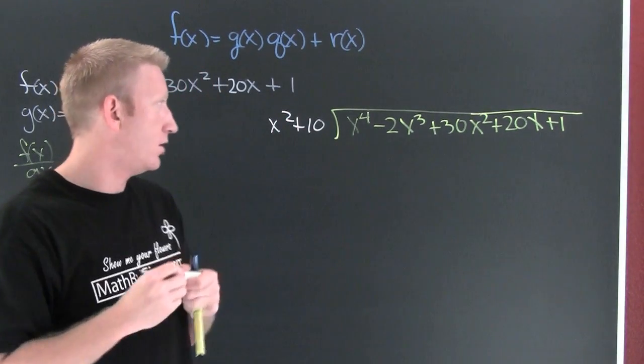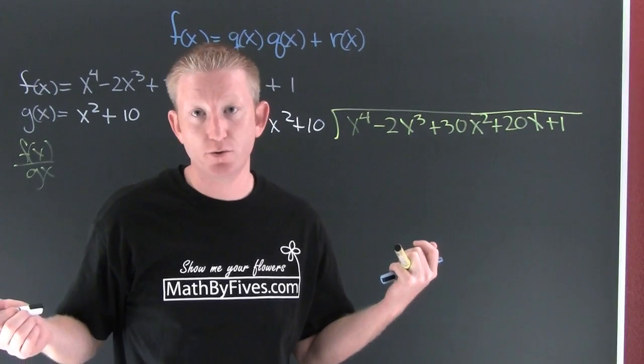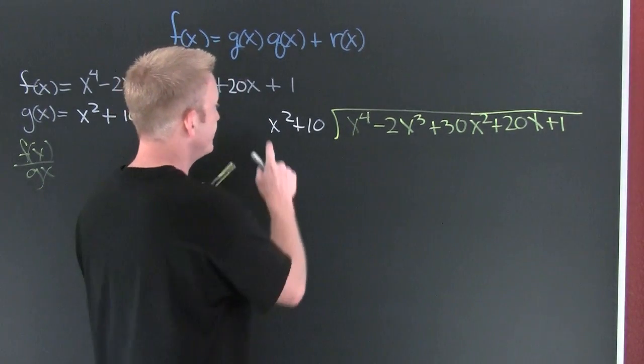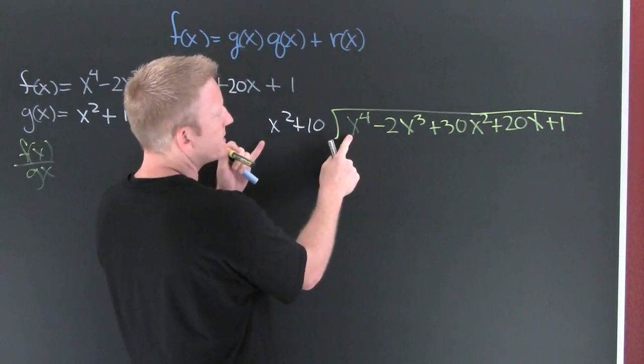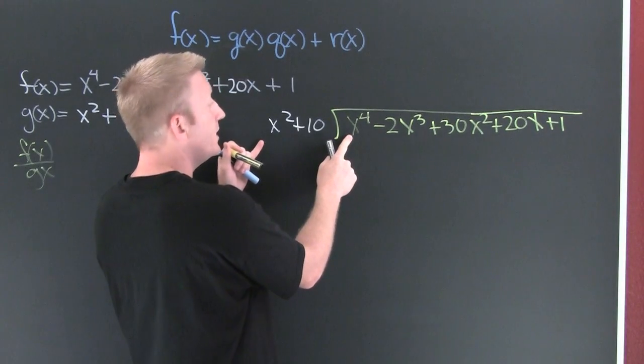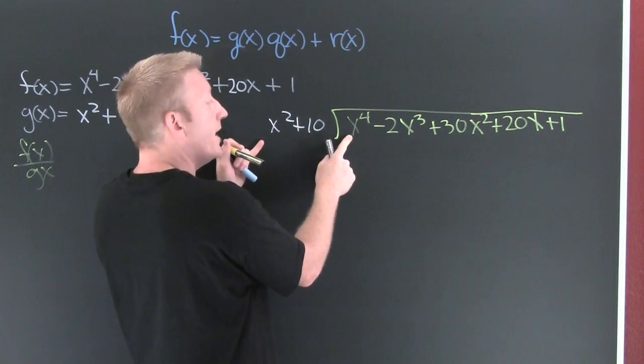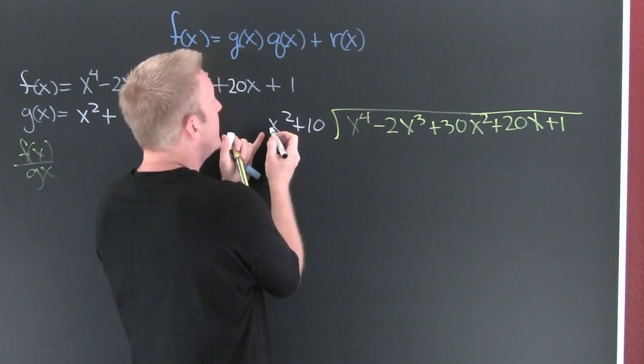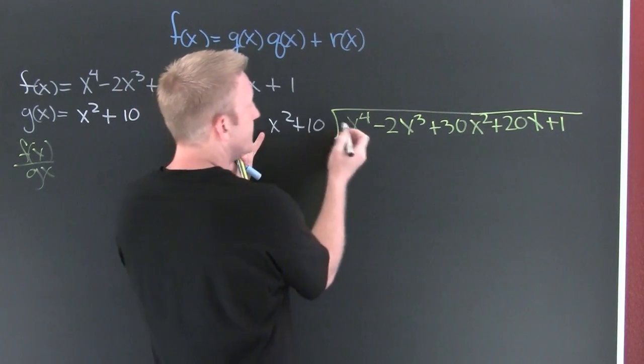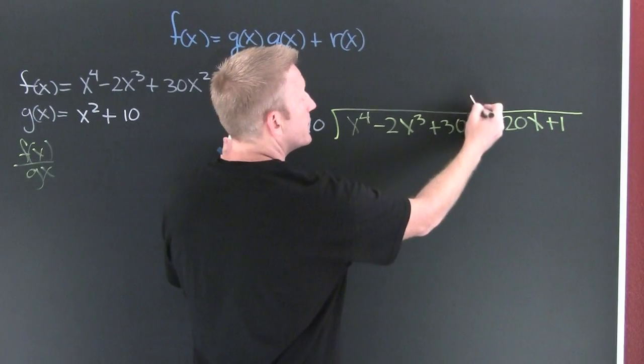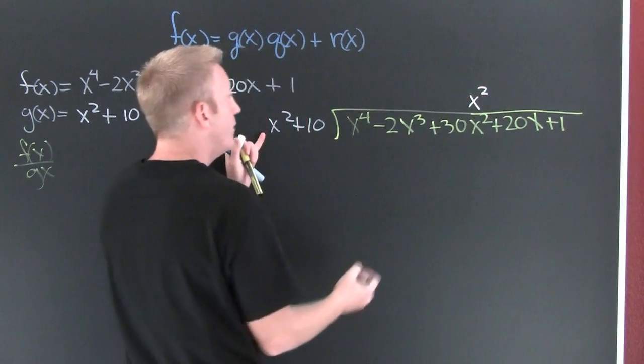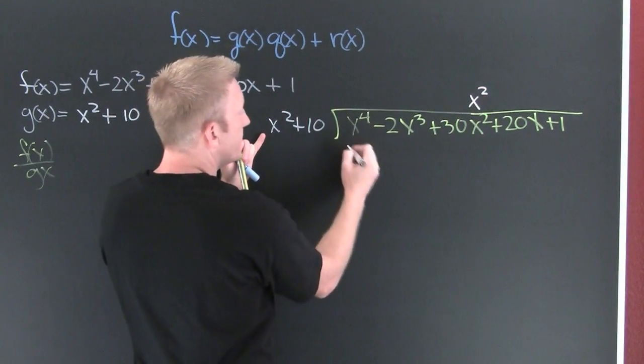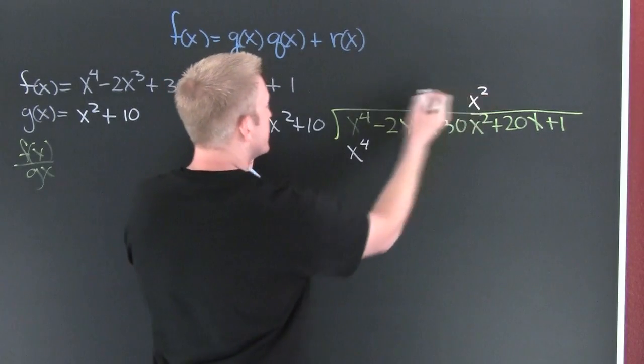So now I go through this old school division. What am I going to multiply x squared by to get x to the fourth? I think I'm going to multiply by x squared. So then I'm going to multiply this by x squared and I'm going to put it in the x squared column right there.